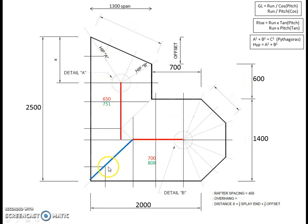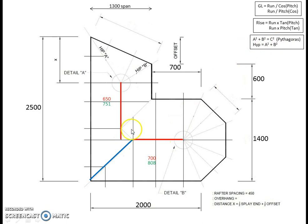The next rafter we're going to look at is this hip rafter coming down here. This is just a standard hip end rafter — not an unusual shape or unusual angle. If you've completed your pitched roof subject you'll have already dealt with a standard hip end rafter like this. We're going to use the Pythagoras formula, which is the one we use most of the time for hips. We need the two sides: we already have the run of the common rafter, which equals the distance along the top plate because it's a 45 degree triangle.